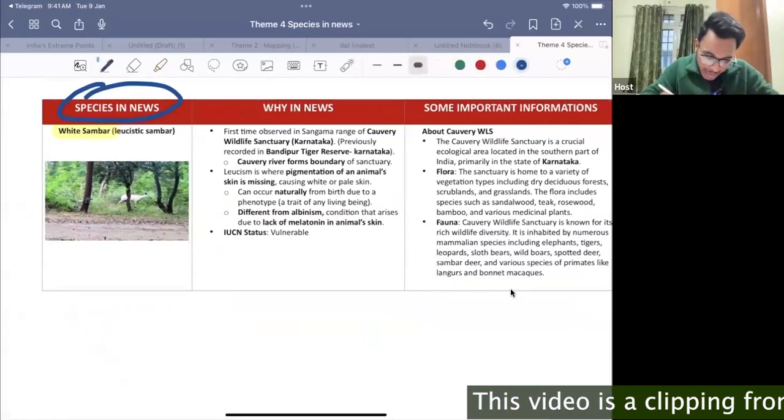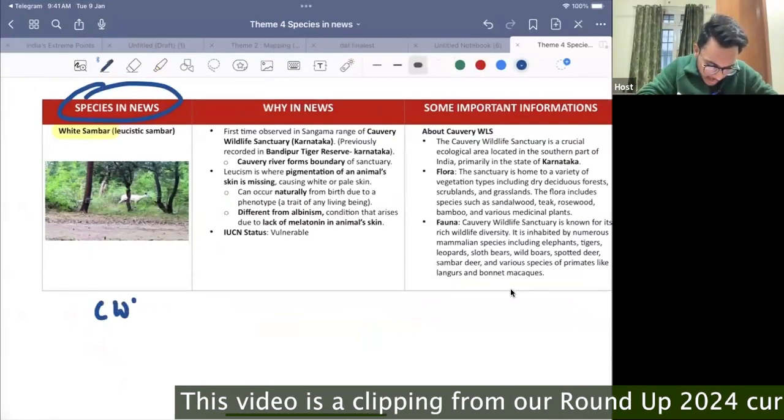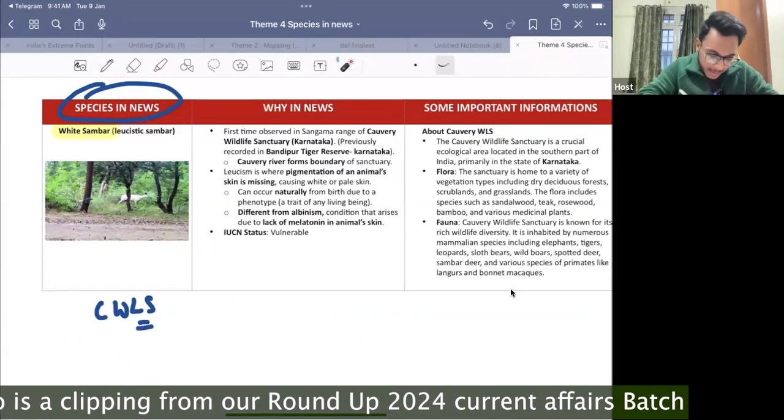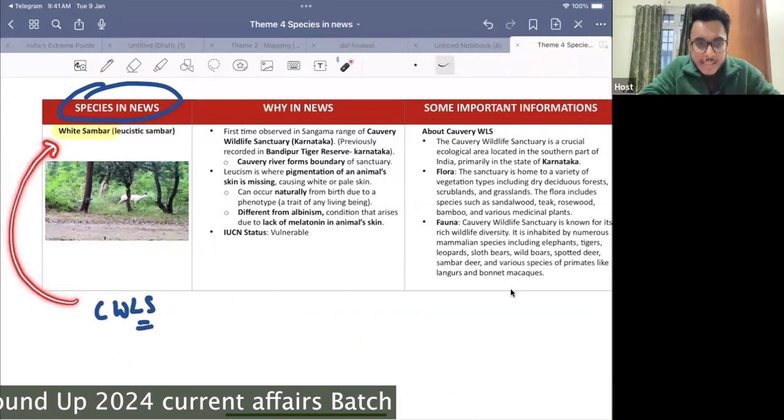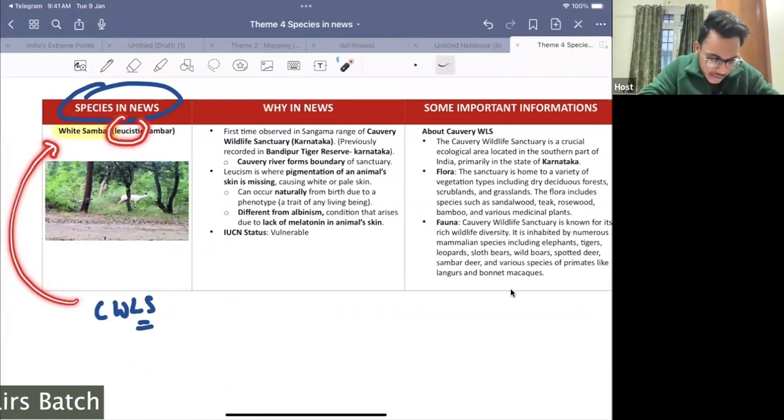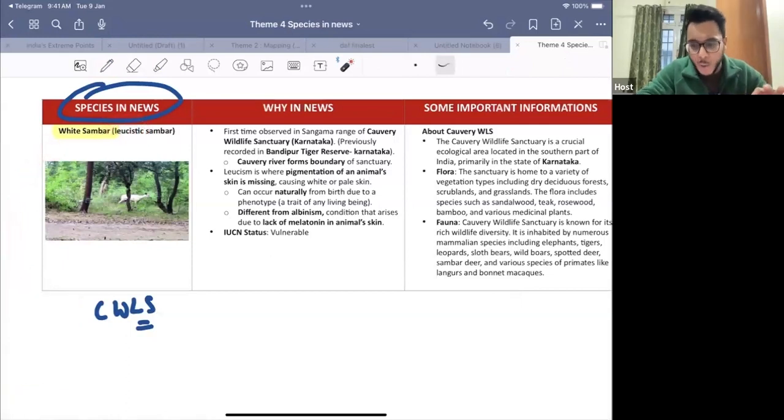Now guys, when we talk about the White Sambar, what has happened in the Kaveri Wildlife Sanctuary? White Sambar was spotted. Now White Sambar, it is called as the Leucistic Sambar. Now let's understand this particular phenomenon.